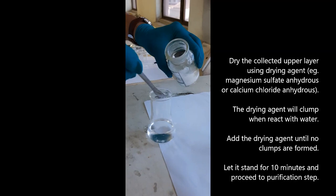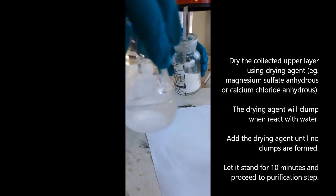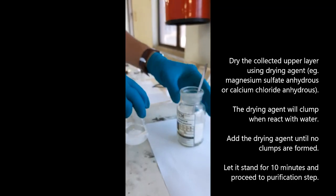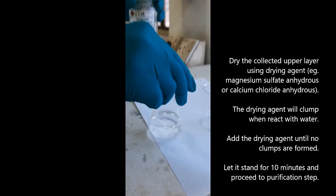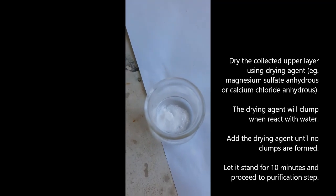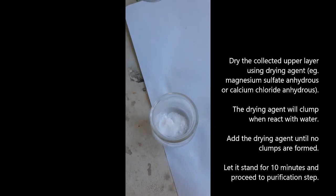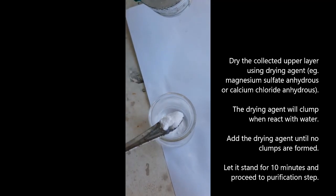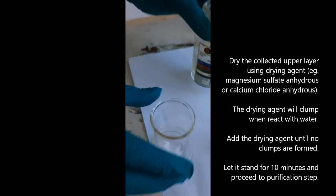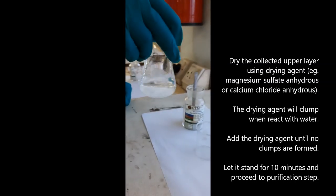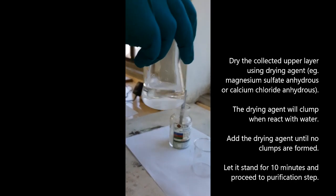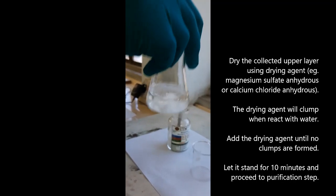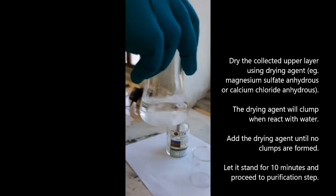Dry the collected upper organic layer over a drying agent. This can either be anhydrous magnesium sulfate or calcium chloride. Observe when the drying agent comes into contact with the liquid product. Surplus water causes the drying agent to clump. Add more drying agent until clumps are no longer visible. Let it stand for 10 minutes before proceeding to the purification step.